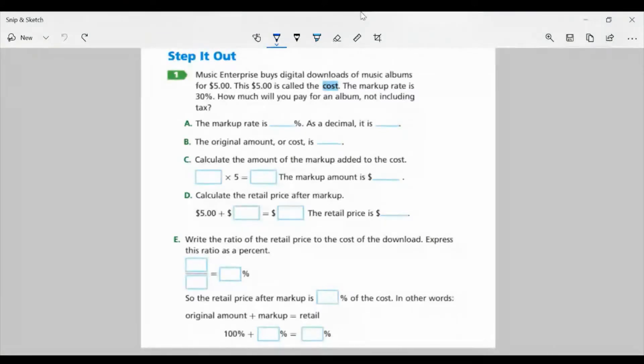Part A, the markup rate is 30%. As a decimal, we would write that as 0.3. And to get 30% into a decimal form, I would take 30 divided by 100. Any percentage divided by 100 will give you its decimal form. So 0.3 is in decimal form.